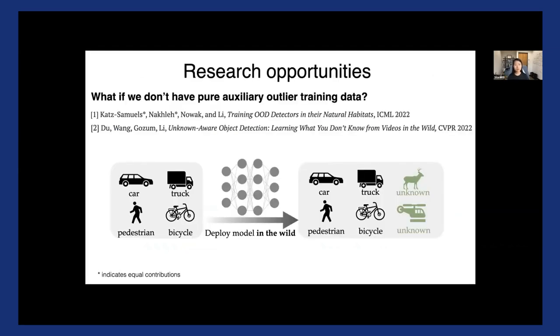So this framework also opens up some interesting research opportunities and open questions. For example, I have, you know, previously mentioned that the framework may assume that we have access to some auxiliary outlier data. But where do we even get this data from, right? And one idea is to think about, can we leverage? Can we leverage this wild data that we can naturally collect upon deploying a machine learning classifier in the wild?